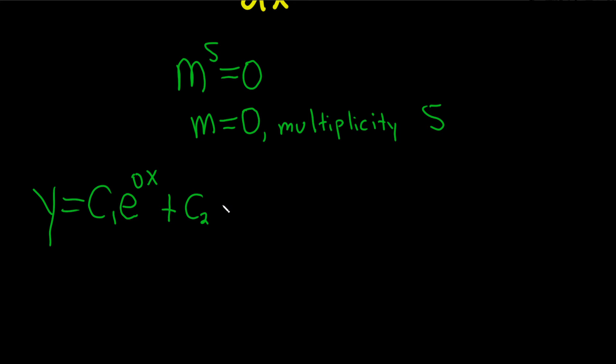If it was multiplicity two, you'd put an x here, and that would be the answer. If it was three, you would do this, and that would be the answer. We're not quite there yet.